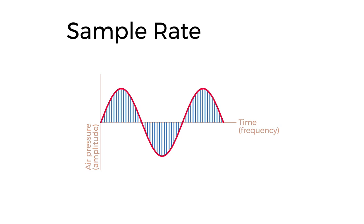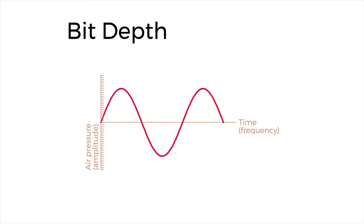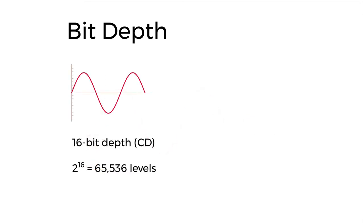So in CD quality audio, we're storing the amplitude of the sound wave 44,100 times every second. The question now is the resolution of the vertical axis — how many levels of difference do we need between the highest and the lowest points of the sine wave? The answer to that question is described by bit depth, not to be confused with bit rate, which we'll return to in a moment. Bit depth is a bit geekier and more abstract than sample rate. If you imagine the distance between the highest and lowest amplitudes that our equipment can capture, bit depth describes how many pieces we break that distance into. So the higher the bit depth, the more detail we can capture.